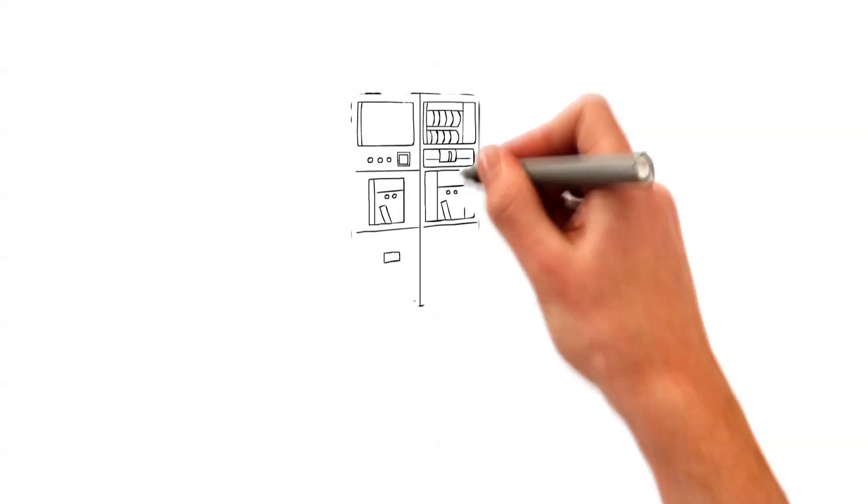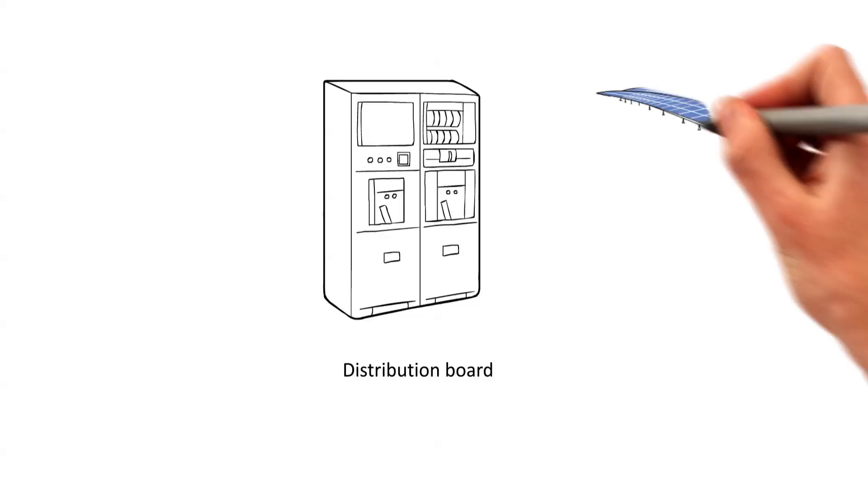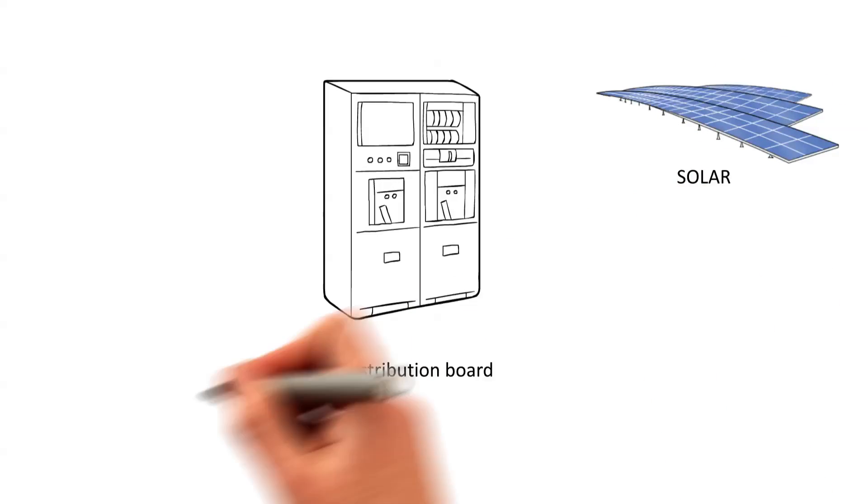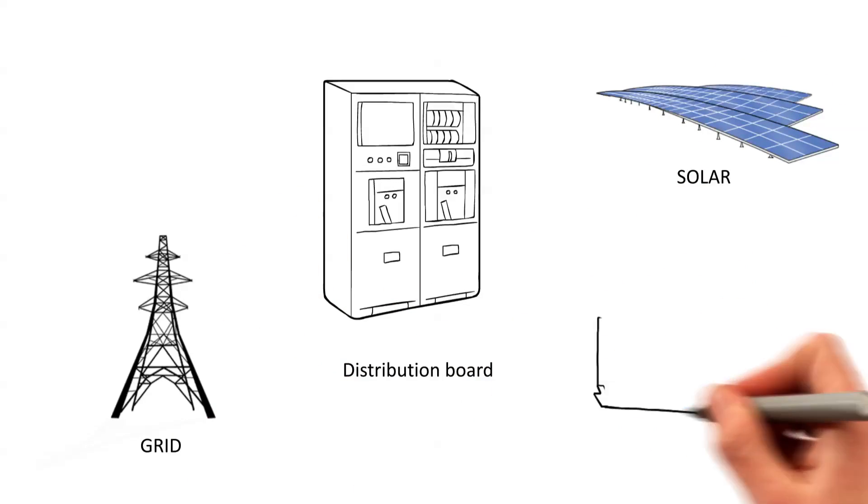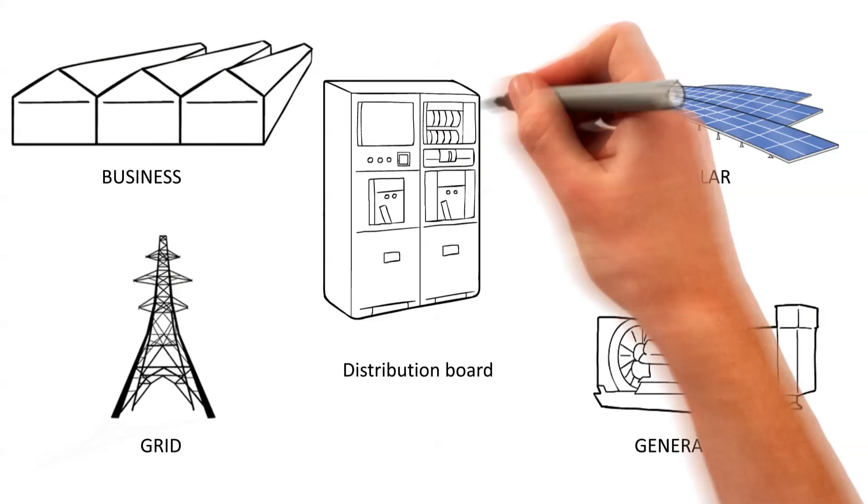SolarCentury has developed a unique hybrid technology, which allows a solar PV system to work alongside an existing power grid, as well as diesel generators, to power all your business' energy requirements at much less cost.